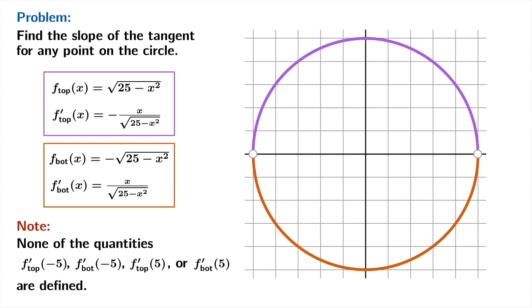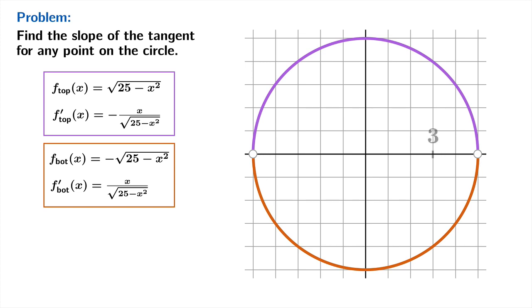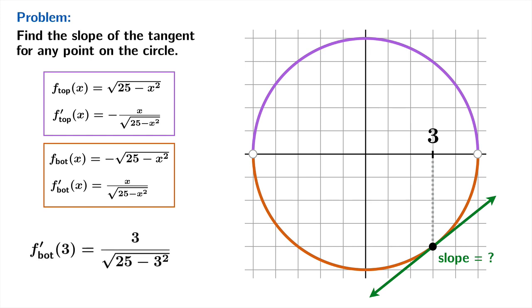None of the values obtained by plugging in −5 or 5 into either formula are defined — you get zero in the denominator. So those arguments aren't in the domain of either derivative. For example, to find the tangent slope on the bottom half where x = 3, we use the bottom-half derivative formula, plug in 3, and find the slope is 3/4.